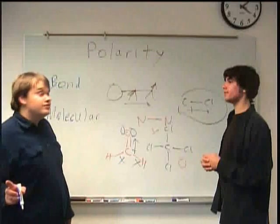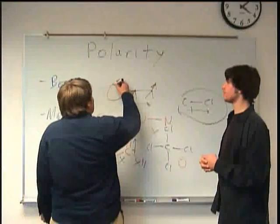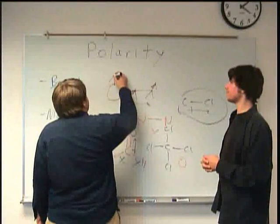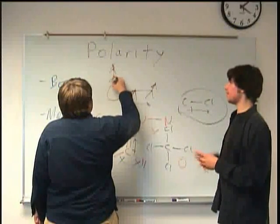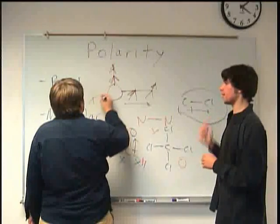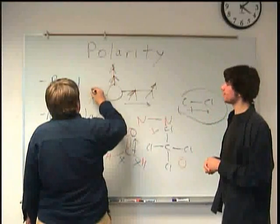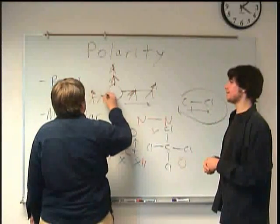Now, consider, if you will, four identical horses of the same strength, pulling in all different directions. Basically, where each horse is representing one of the chlorines. Exactly. Oh, I get this. This is kind of cool. It's basic physics.